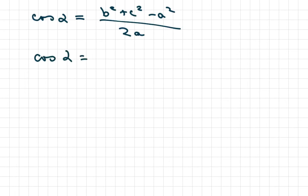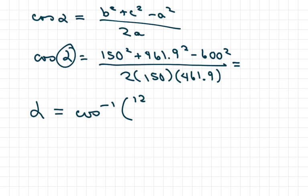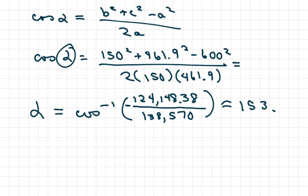So we get cos of alpha equals 150 squared plus 461.9 squared minus 600 squared, all over 2 times 150 times 461.9. And this is going to give you cos of alpha. So in order to find alpha, you do inverse cos. I'm going to simplify this a little. Negative 0.38 over 138,570. And this is going to be approximately 153.6 degrees.